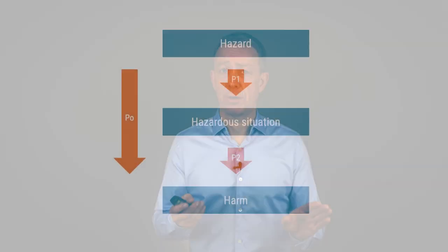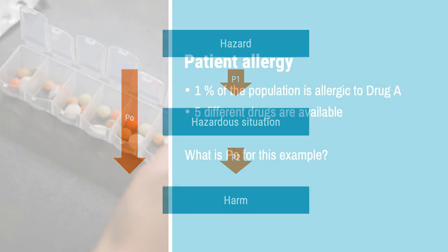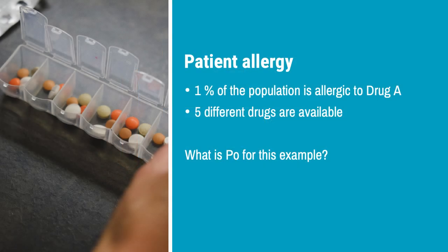I assume you have some basic understanding of risk management. If you don't, I recommend you watch the videos about risk management at Medical Device HQ. One of the most misunderstood statements in this field is that the probability of occurrence of harm should be set to 100% just because you're working with software. I can tell you that statement is wrong. The probability of occurrence of harm can be split up into two components: P1 and P2. P1 is the probability of occurrence of the hazardous situation. P2 is the likelihood that the hazardous situation will lead to harm. When people claim the probability shall be 100%, they refer to P1 — but even this assumption can be challenged. Let's look at an example where software is used to recommend the proper medication. We assume that 1% of the patients are allergic to drug A, and we have five different drugs to choose from.